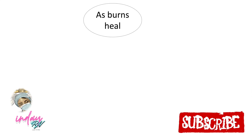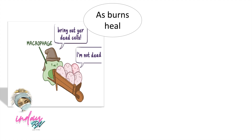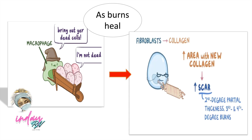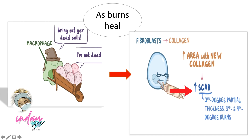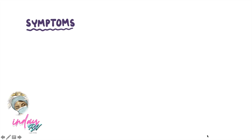As burns heal, macrophages move into the skin to remove dead cells, and fibroblasts create new collagen to repair the damaged skin. The more extensive the area with no collagen, the more extensive the scarring. Scars are common in second degree deep partial thickness burns and third and fourth degree burns.